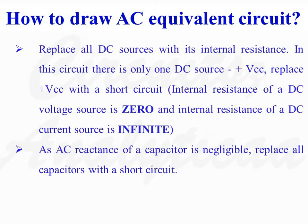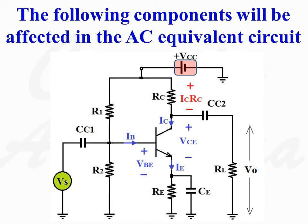As the AC reactance of a capacitor is negligible, replace all capacitors in the circuit with a short circuit. So when we draw the AC equivalent circuit, the following components will be affected: the voltage source VCC, coupling capacitor CC1, bypass capacitor CE, and coupling capacitor CC2.